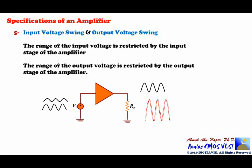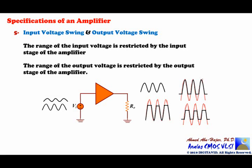However, it is possible that the output voltage will clip — at the top, at the bottom, or at both. Clipping at the input occurs when transistors in the input stage shut off. If the voltage goes too high, the transistors shut off and the output clips at the top. If the voltage drops too low, the transistors shut off and the output clips at the bottom.